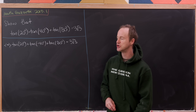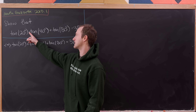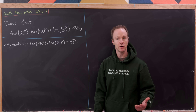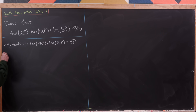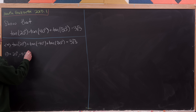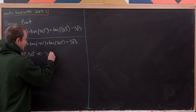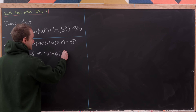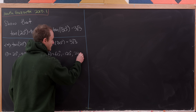What we did there is use the fact that tangent is an odd function, so we can bring the minus sign inside of the function. Also observe that if we set theta equal to 20 degrees, minus 40 degrees, or 80 degrees, then 3 times theta is going to be equal to 60 degrees, minus 120 degrees, or 240 degrees.